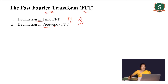Using these two methods — DFT and FFT — you can convert any time domain sequence into a frequency domain sequence. In this session we have seen the way of representing a discrete time sequence and converting it from the time domain to the frequency domain. In the next class we will see the characteristics of a linear time system. Thank you and happy learning.